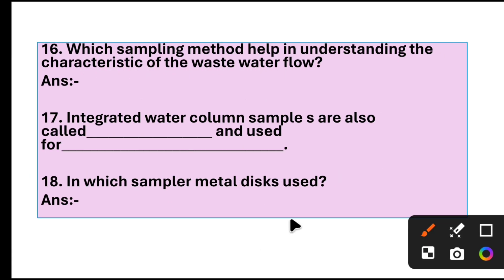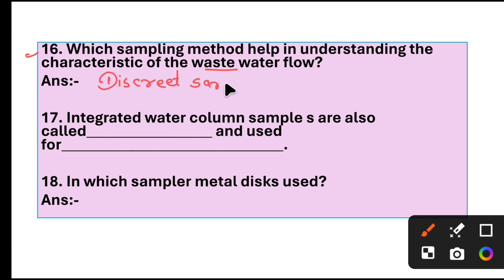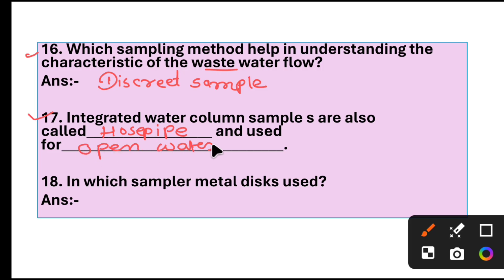Question 60: Which sampling method helps in understanding the characteristics of wastewater flow? Answer: Discrete sample. Integrated water column samples are also called Waspipe and are used for open water sampling. Question 90: In which sampler are metal digs used?